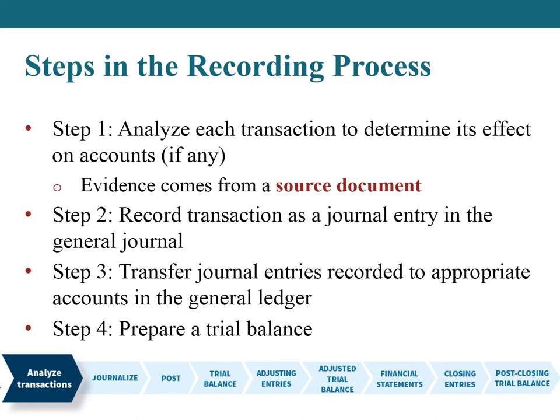Steps in the recording process: accounting information systems rely on a process called the accounting cycle — a series of steps used to account for and report transactions. The accounting cycle begins with the analysis of transactions and ends with the preparation of a post-closing trial balance. Step one: analyze each transaction to determine its effect on accounts, if any. The source of the analysis comes from a source document.